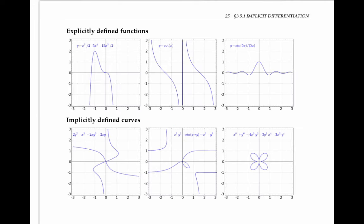So far, we've developed a lot of techniques for finding derivatives of functions defined explicitly in terms of an equation y equals something. In this section, we'll consider curves that are defined implicitly in terms of any equation involving x's and y's. The points on this curve are the values of x and y that satisfy this equation. And when you have implicitly defined curves, they are not necessarily functions.